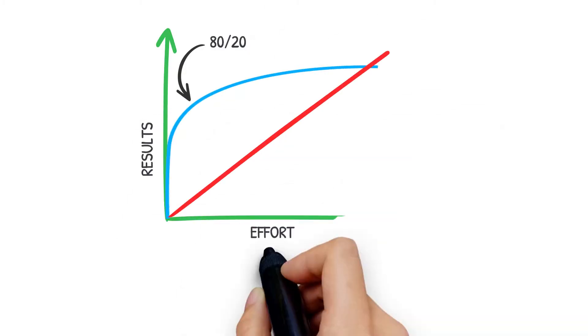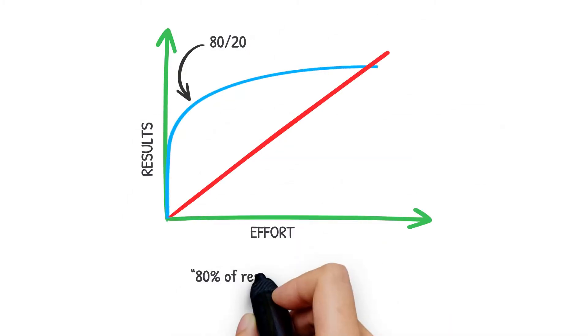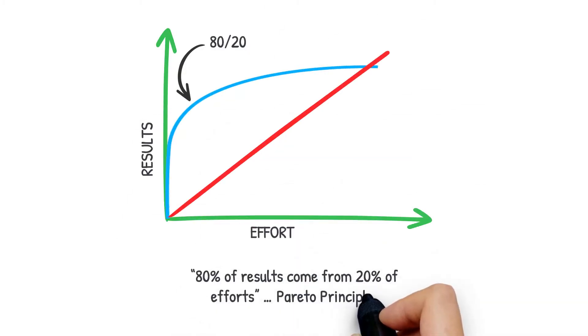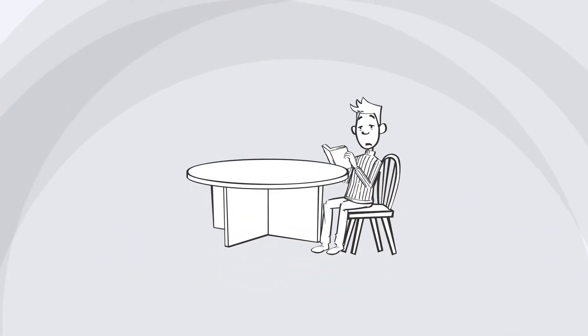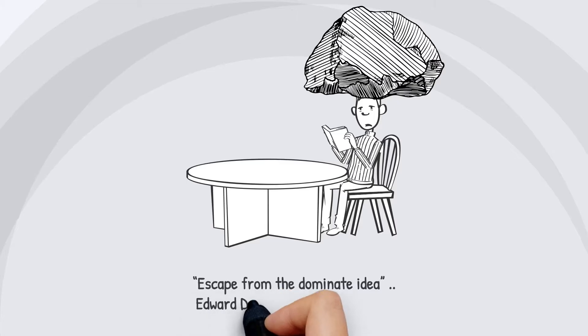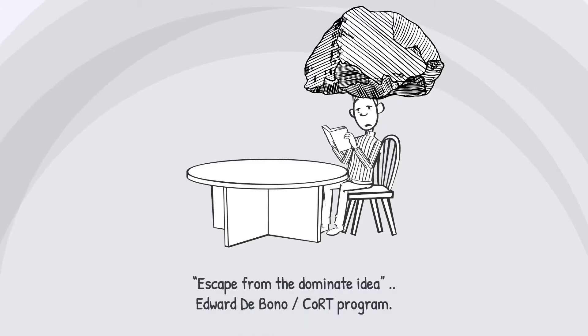80% of results come from 20% of efforts — the Pareto Principle. Escape from the Dominant Idea — Edward De Bono, Court Program.